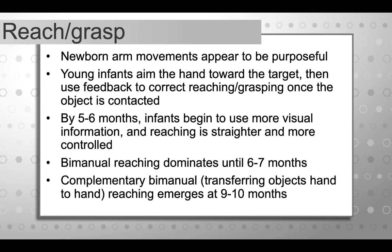By age five to six months, infants have much better visual skills. When we're born, we can only see about eight to twelve inches in front of us, mostly black and white, mostly shadows, very blurry. That changes significantly in the first five to six months. By five or six months, vision is much better, enabling feed-forward control. Reaching becomes straighter and more controlled — less batting with later correction, and more of a controlled and targeted motion.